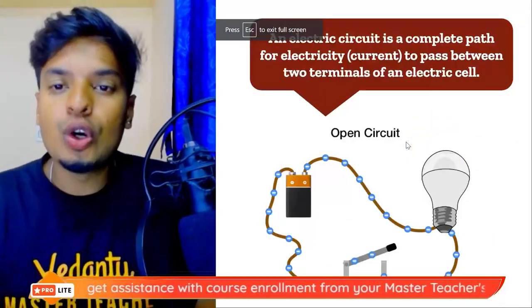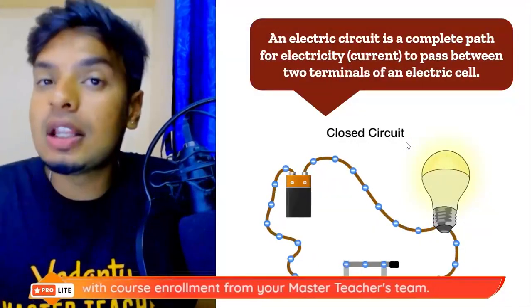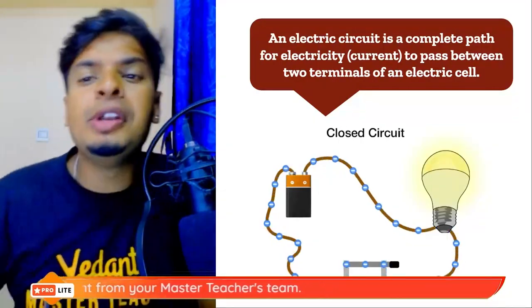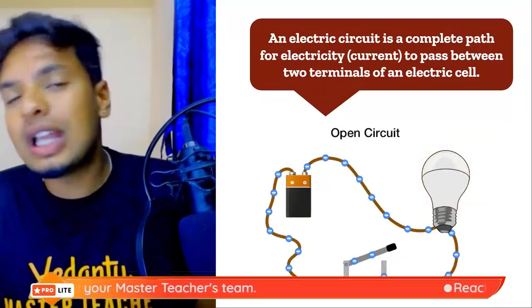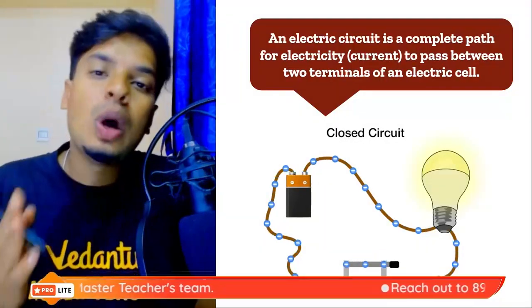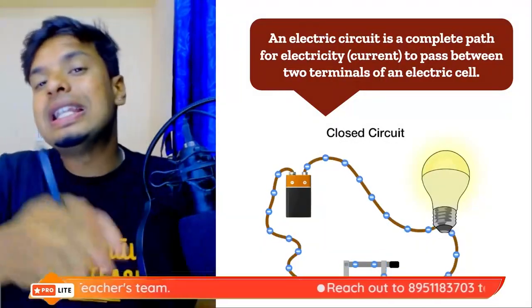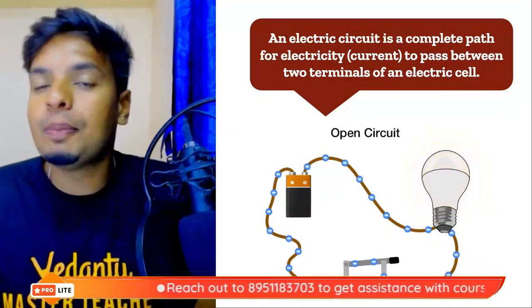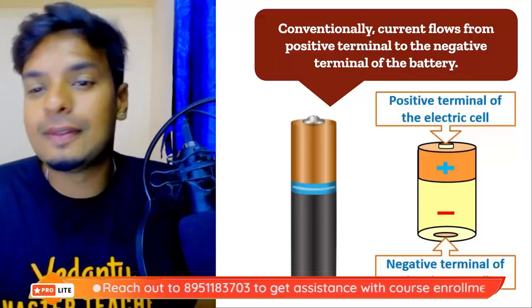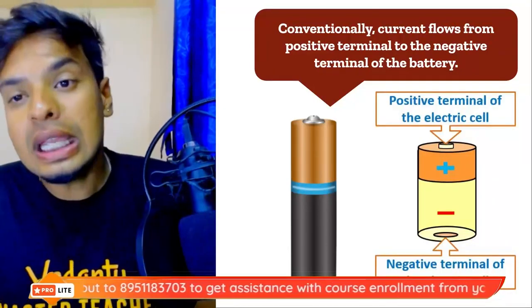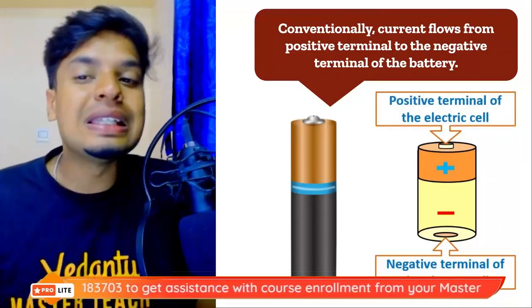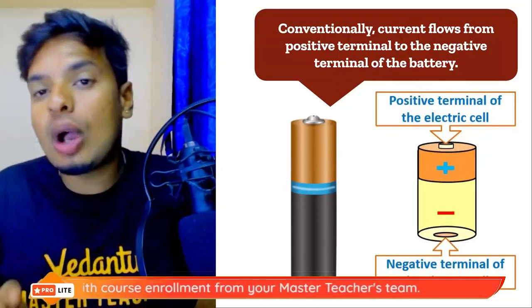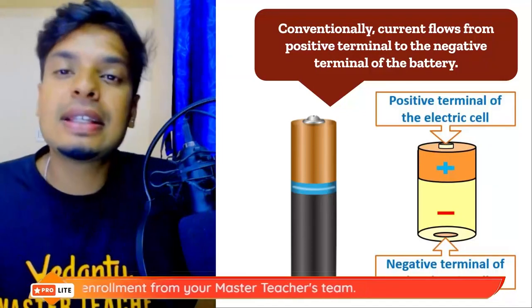An electric circuit is a complete path for the electricity or current to pass between two terminals of the cell. The cell has two terminals: one is the positive terminal, the other is the negative terminal. Electric current always flows from the positive terminal towards the negative terminal. Conventionally, electric current flows from positive terminal to the negative terminal of the battery. If that complete flow happens, then the circuit is complete.